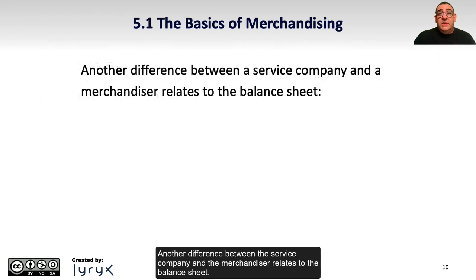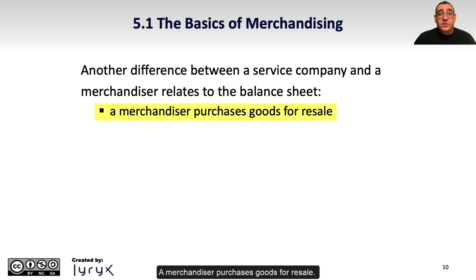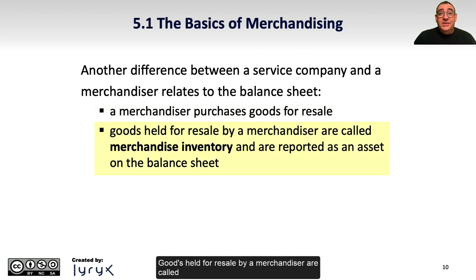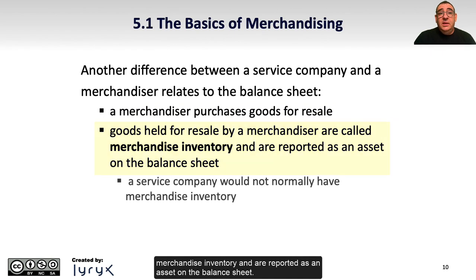Another difference between the service company and the merchandiser relates to the balance sheet. A merchandiser purchases goods for resale. Goods held for resale by a merchandiser are called merchandise inventory and are reported as an asset on the balance sheet. A service company would not normally have merchandise inventory.